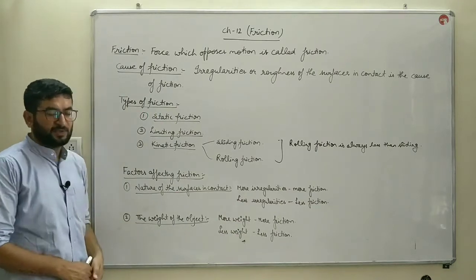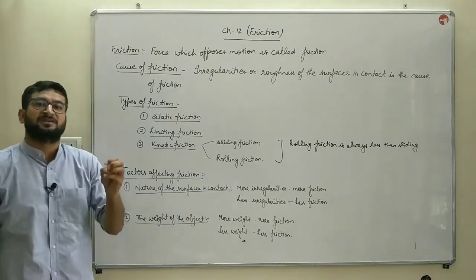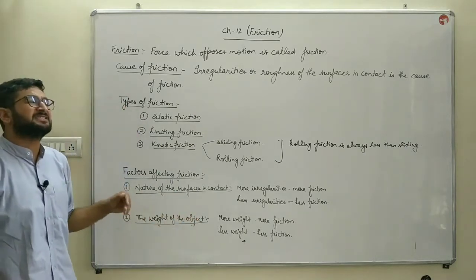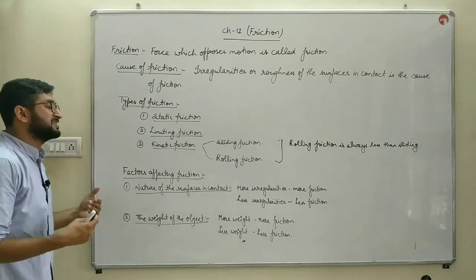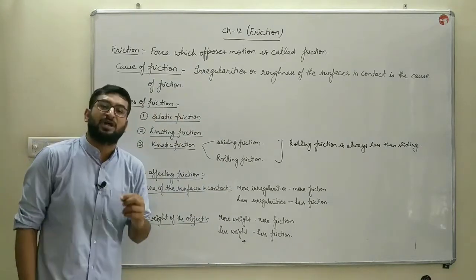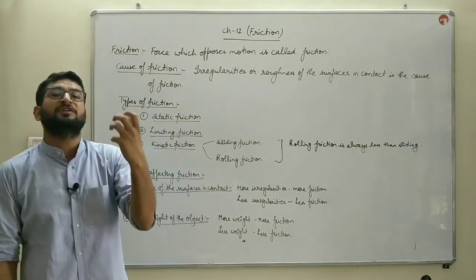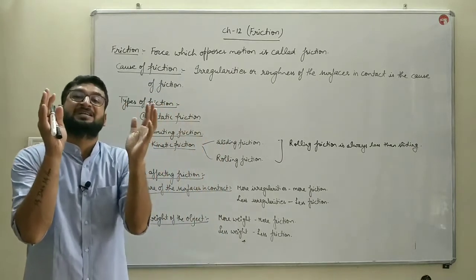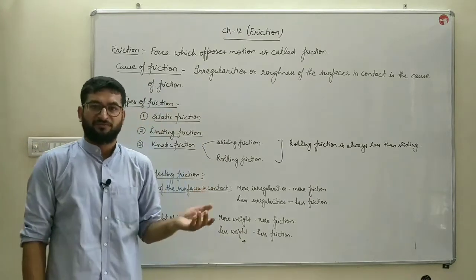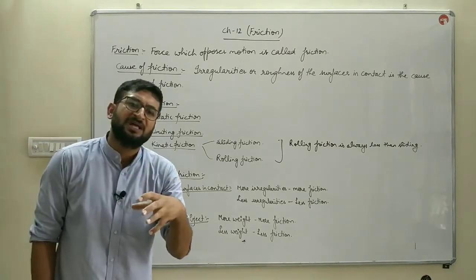The second factor is the weight of the object. More the weight of a particular object, the more friction it produces over another surface. For example, if we have a larger ball and a smaller ball, the ball with more mass and more weight will produce more friction from that surface, whereas the smaller ball with less weight will produce less friction.